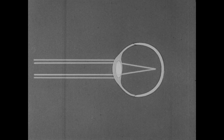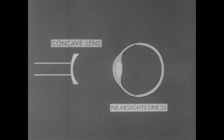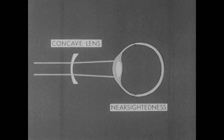To correct this condition, called nearsightedness, we need eyeglasses using concave lenses. A concave lens will cause light rays to diverge slightly, so that they focus farther back on the retina.